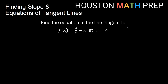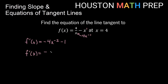Let's do another example. We want to find the equation of the tangent line to f(x) = 4/x - x at x = 4. We'll find the derivative first to get slope information, then plug in the x value. Remember that 4/x can be written as 4x⁻¹. The derivative of that term: the negative 1 comes out front giving negative 4, and the power decreases by 1, giving x⁻². The derivative of negative x is just negative 1. So f'(x) = -4x⁻² - 1, which we can also write as -4/x² - 1.